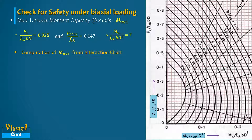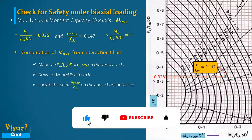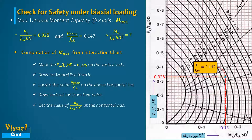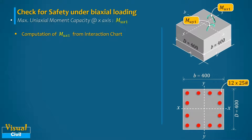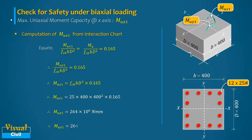To compute Mux1 from the interaction chart, mark Pu/(fck·b·D) = 0.325 on the vertical axis, draw a horizontal line, locate the point p_provided/fck = 0.147 on that line, and draw a vertical line down to the horizontal axis. The value of Mu/(fck·b·D²) obtained is 0.165. Equating Mux1/(fck·b·D²) = 0.165 and substituting the values of fck, b, and D gives Mux1 = 264 kNm, which is greater than the design moment Mux.